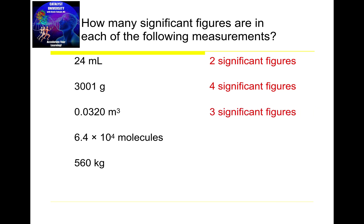When you have scientific notation — any number times 10 to some exponent — you always ignore the 10 to the exponent part. All I'm worried about is the 6.4. I put a box around all non-zero numbers, which is just the 6 and the 4, and there's nothing else. So that one is two significant digits. The key is that we're ignoring the 10 to the fourth.